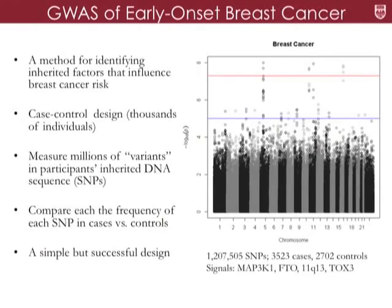One method we use to identify features that influence breast cancer risk is genome-wide association studies. In these studies, we typically use a case-control design, collecting questionnaire data and blood from many women who have cancer and many who do not. We study early onset cancer, meaning breast cancer that develops before age 50. We then measure millions of genetic variants — referred to as SNPs, or single nucleotide polymorphisms — in an individual's inherited DNA. We compare the cases and controls to identify SNPs which appear more common in cases, suggesting that SNP may be related to breast cancer risk.